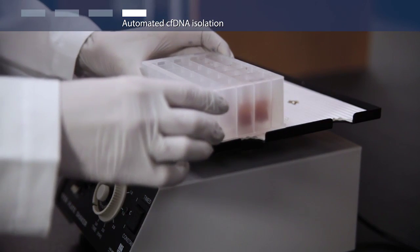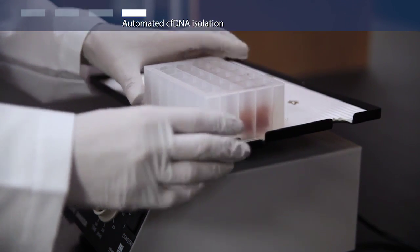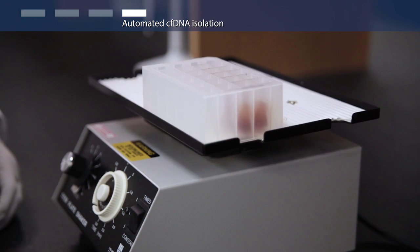Gently shake plate 1 to mix the reagents. Add your plasma samples to rows A and B, according to the table.